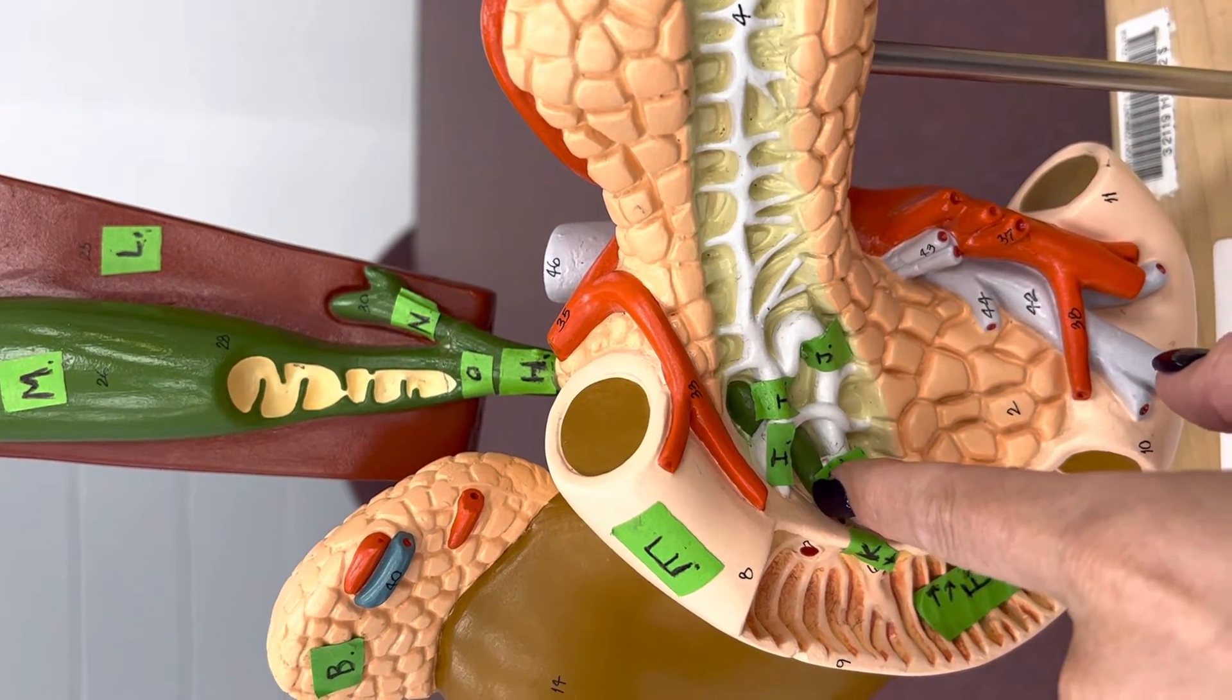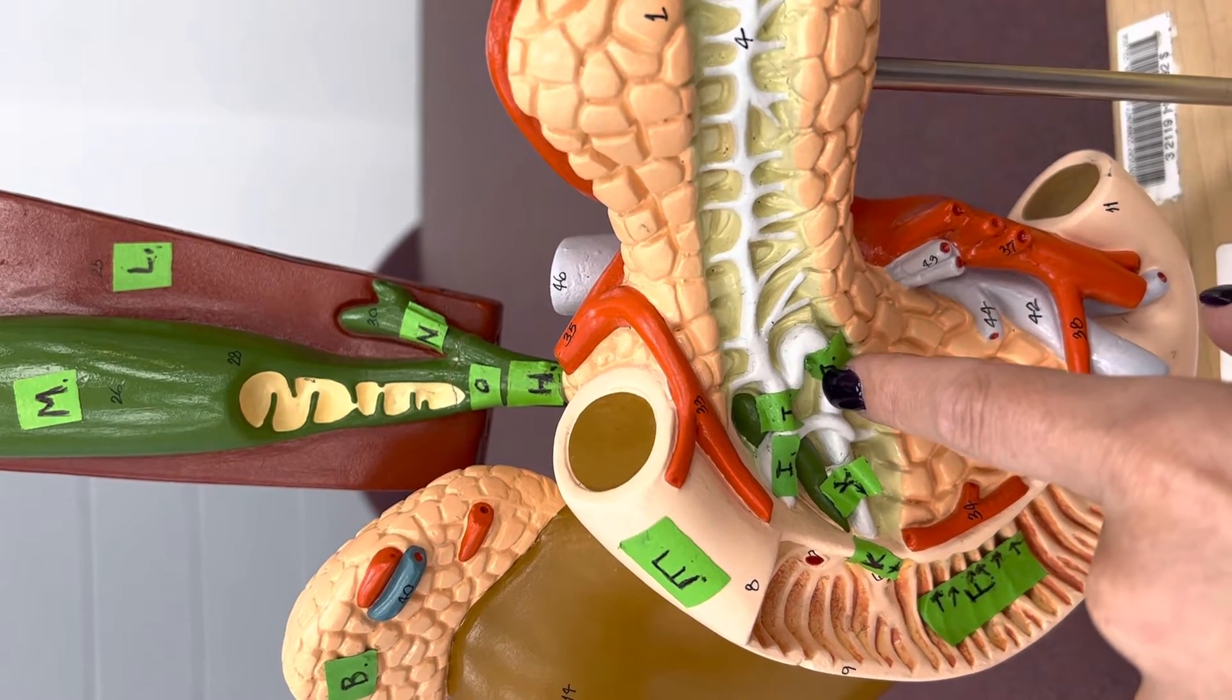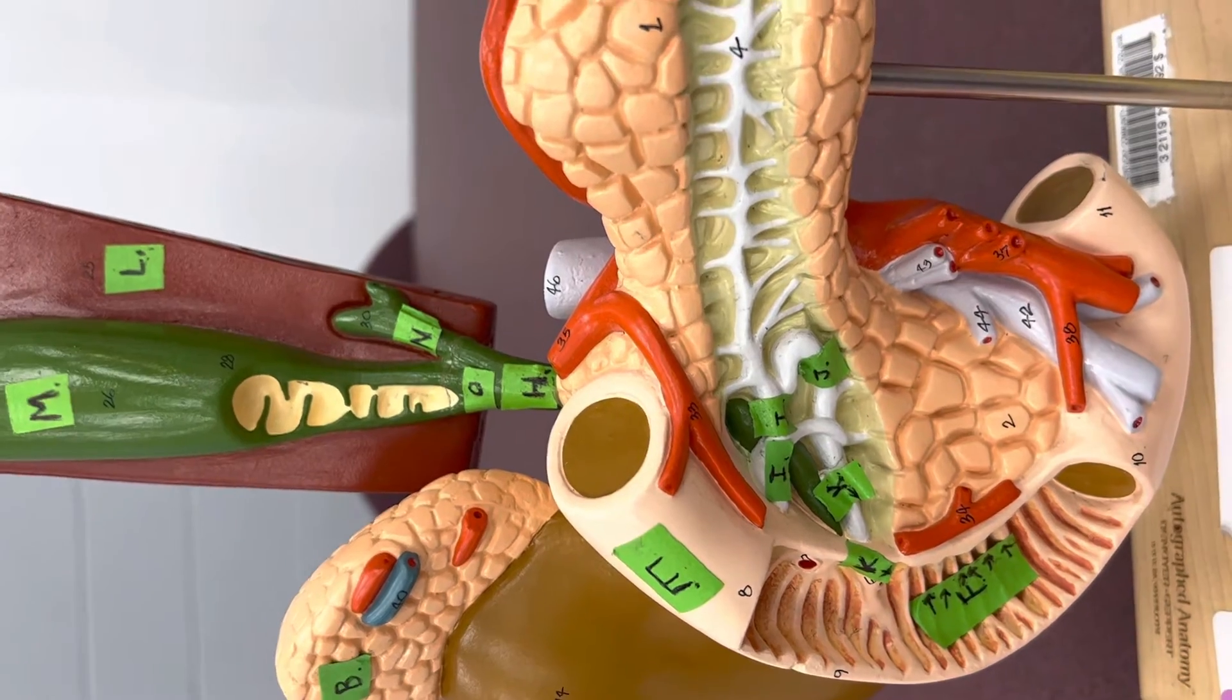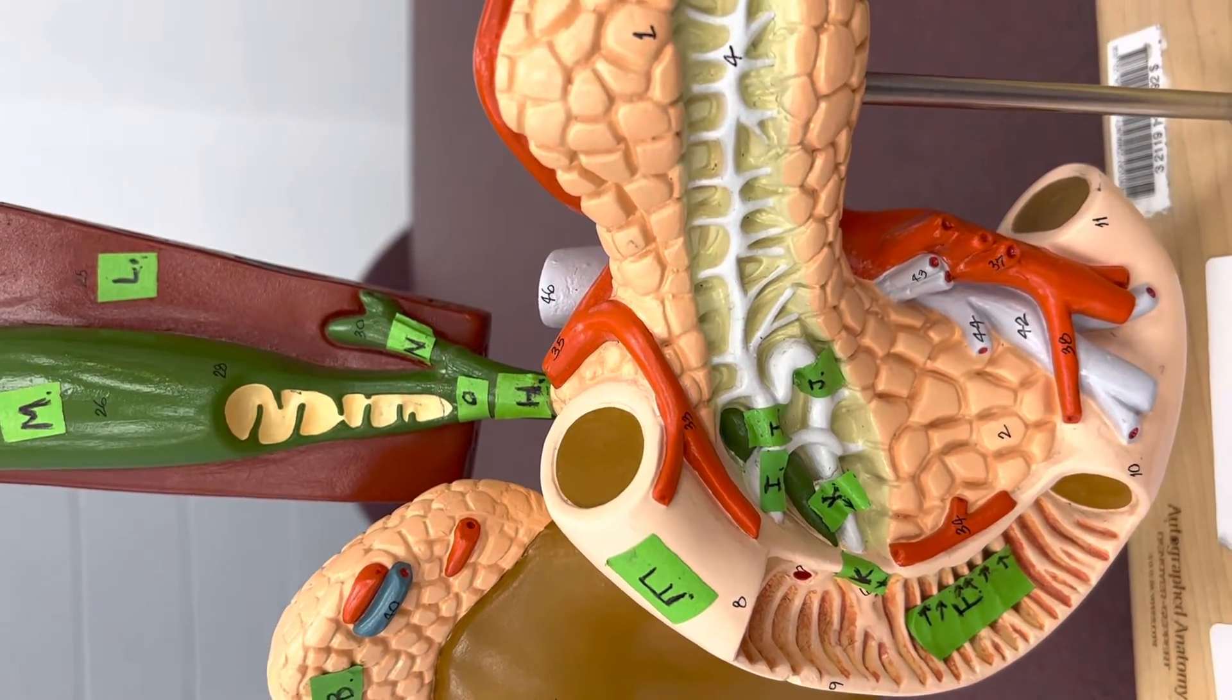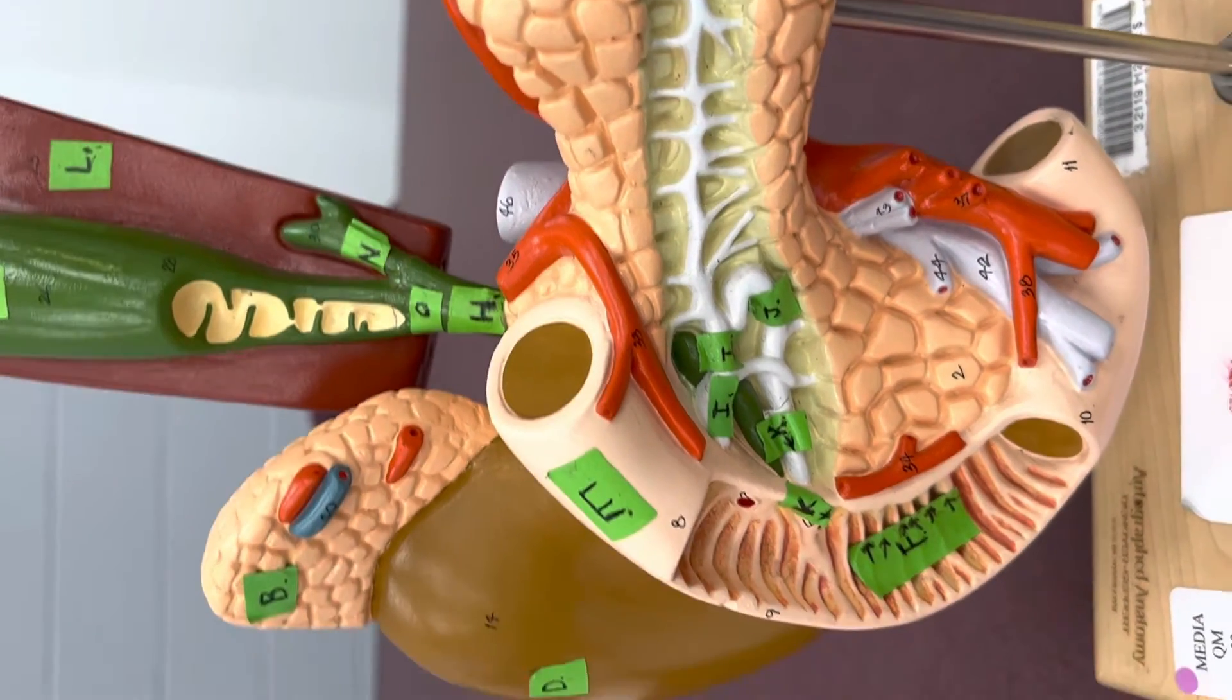Where the common bile duct meets up with the main pancreatic duct, that's where you get the hepatopancreatic duct, where it's dumping both of those into the duodenum.